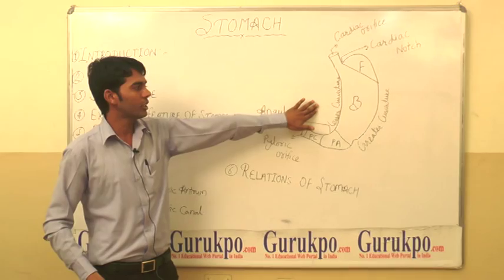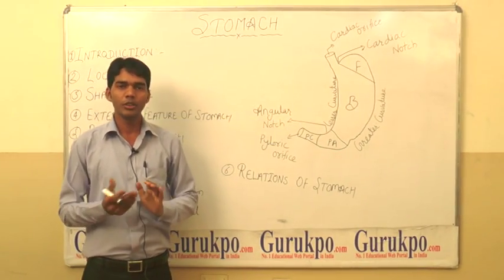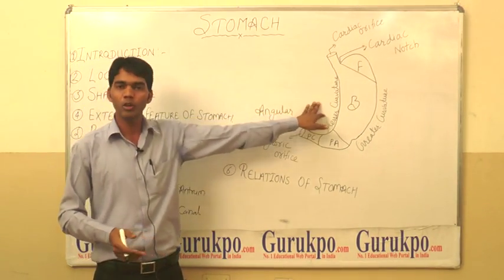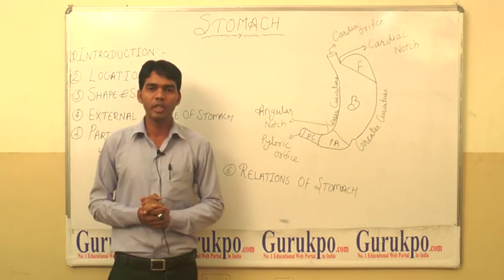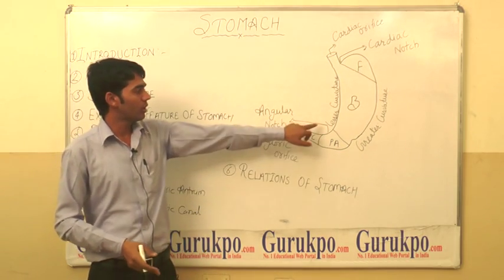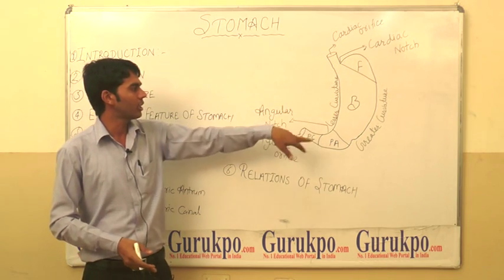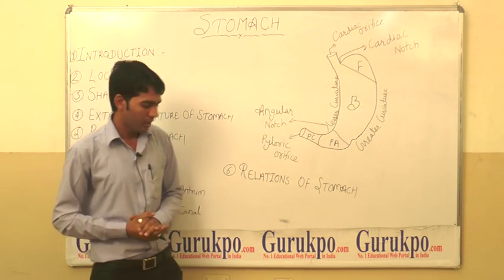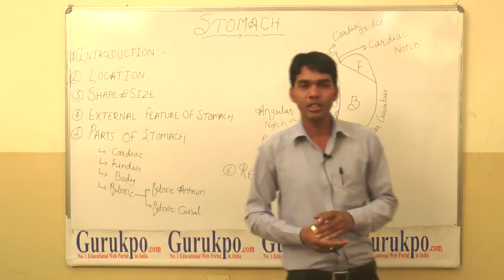The lesser curvature is short and concave, forming the right border of the stomach, and provides attachment to the lesser omentum. The most dependent part of the lesser curvature is marked by an angular notch.